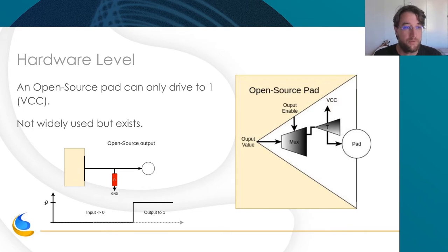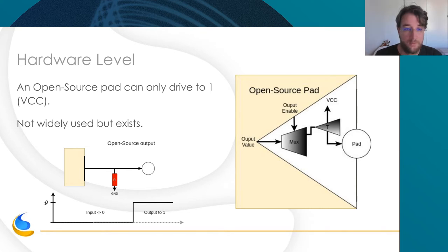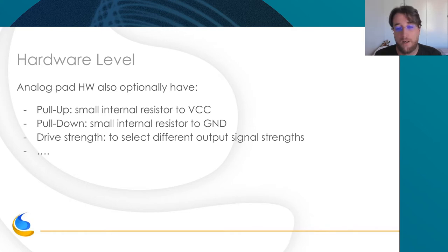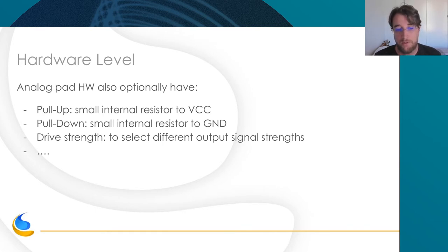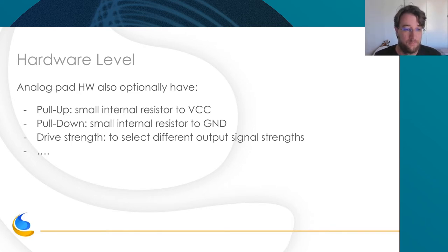The reverse is the open source pad, which is really rarely used but exists. The SoC cannot drive to ground but only to VCC, so it can be used in some specific hardware. Like I said, the analog pad has optional components — you can add small resistors to add a pull-up or pull-down to ground or to VCC. You can also select the drive strength, for example some buses need different drive strengths, and you can lower your consumption with other possible analog options.